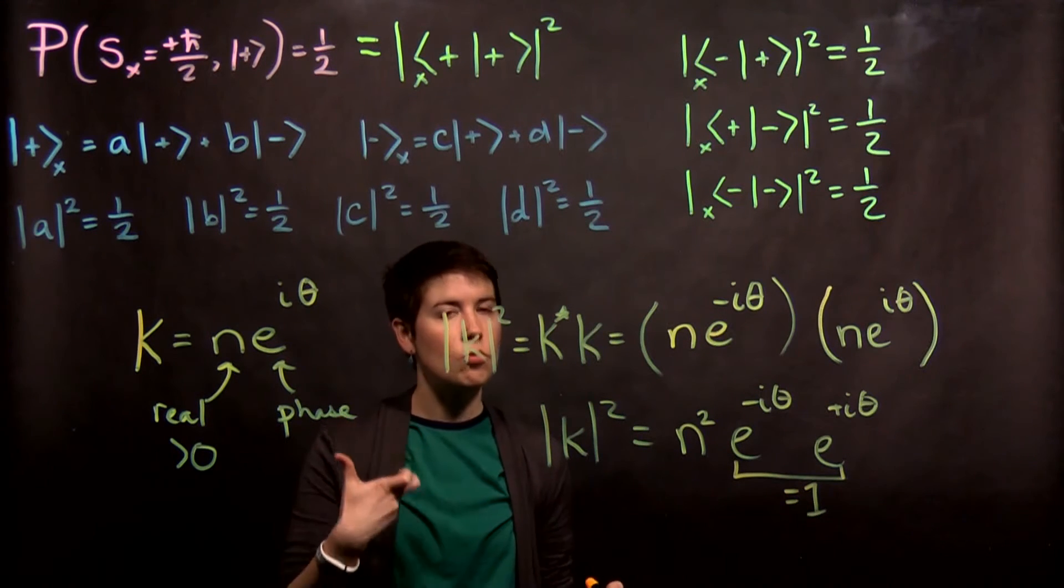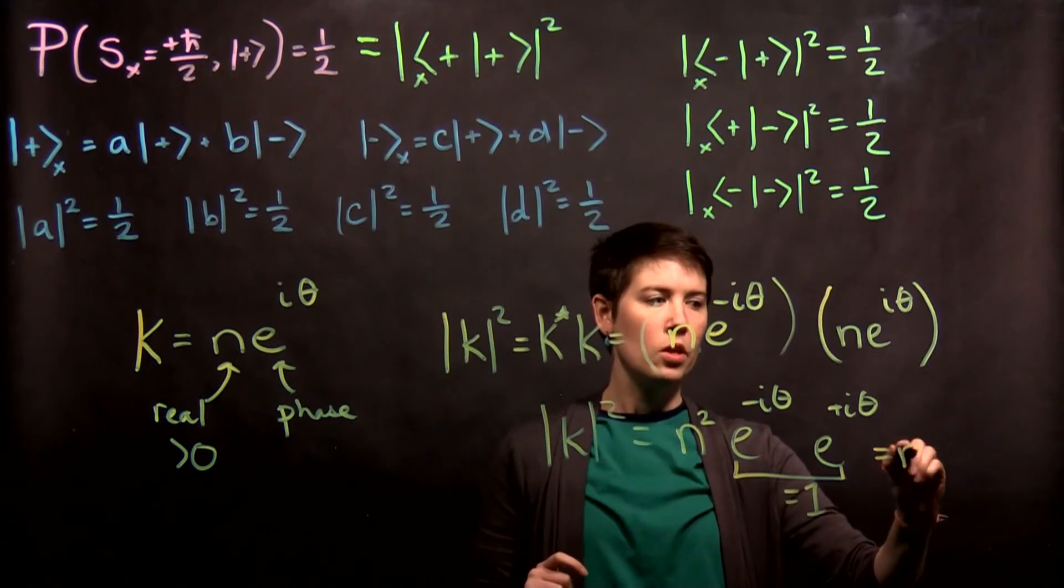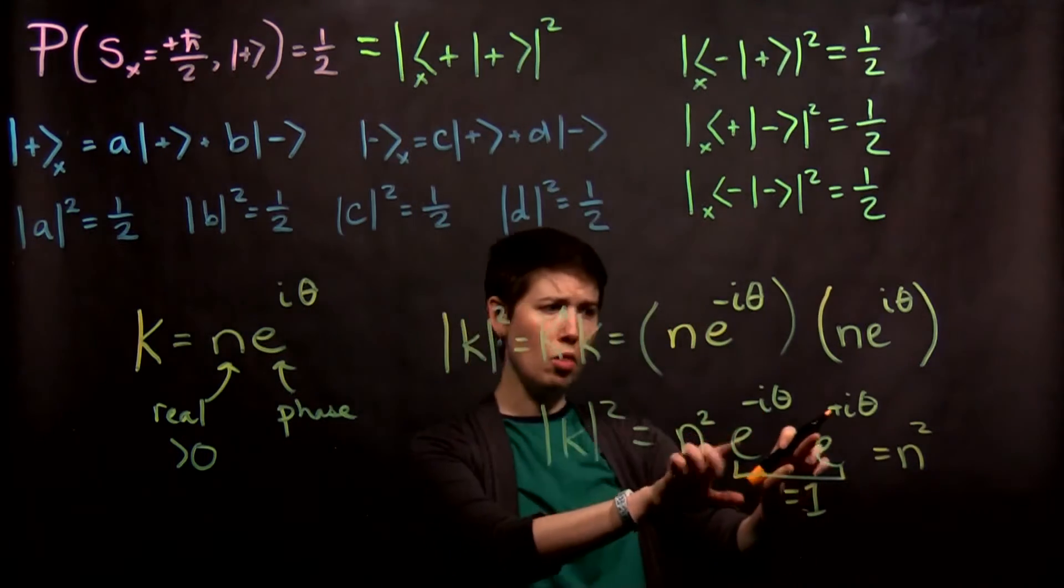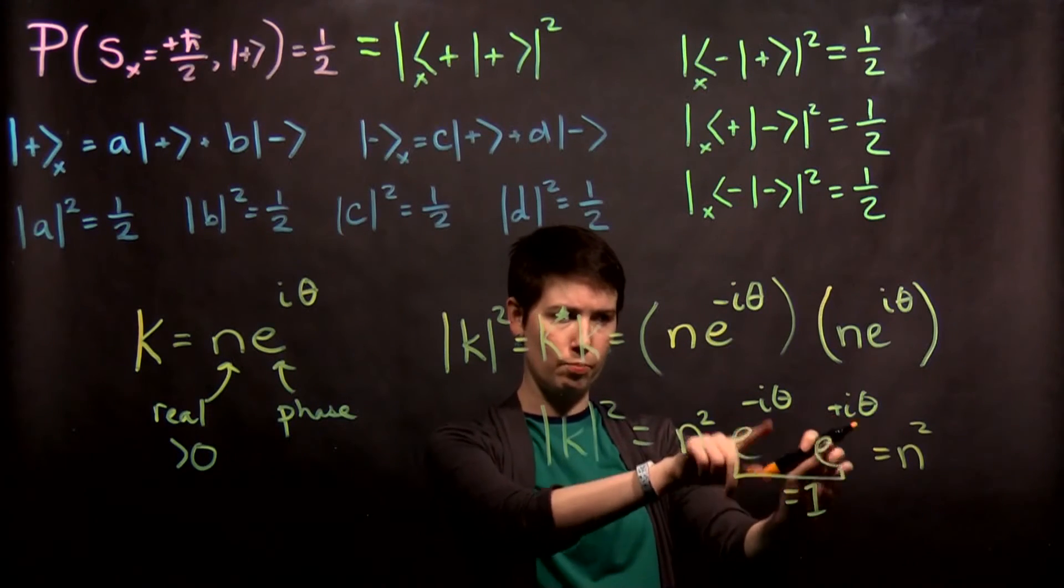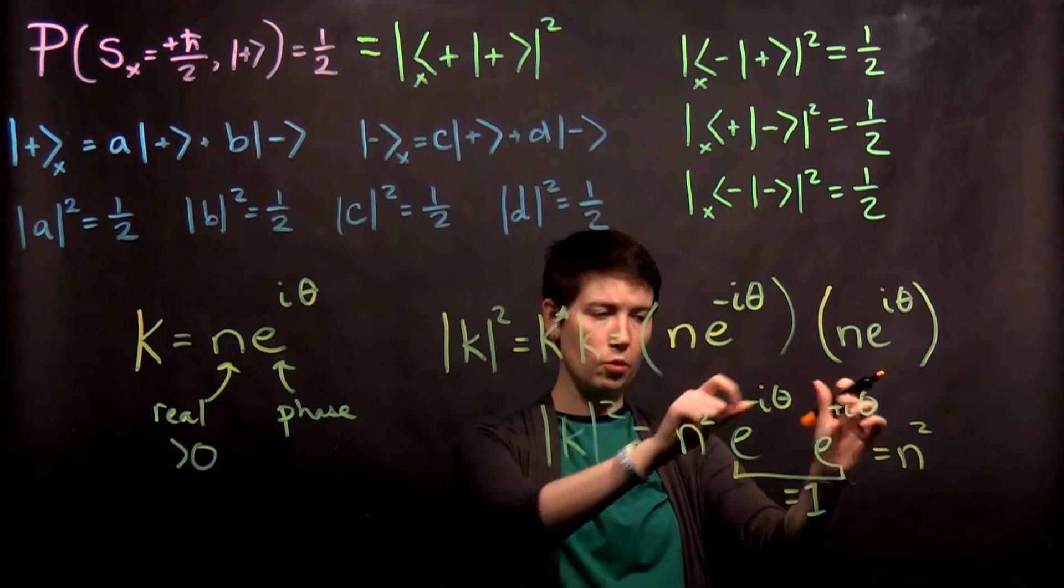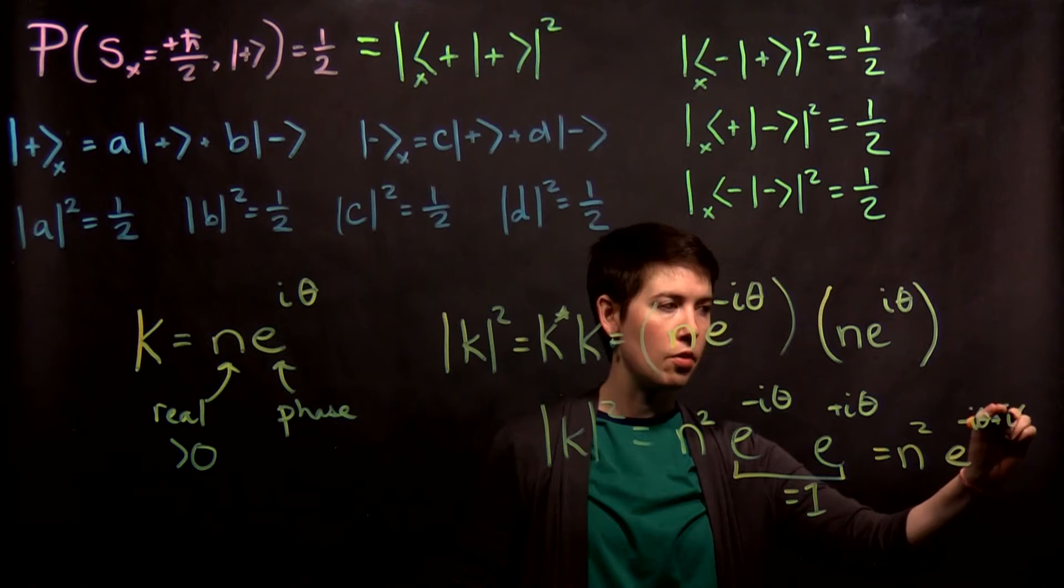So another way to think through this, if mathematically that's something you're not very familiar with, is that whenever you multiply numbers that share a base, but then have different exponents, we can add them together. So that's like e to the negative i theta plus i theta.